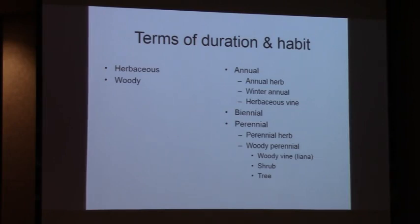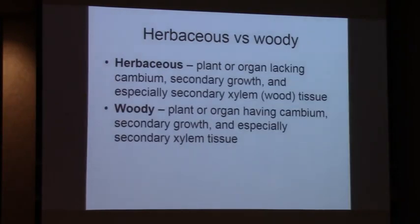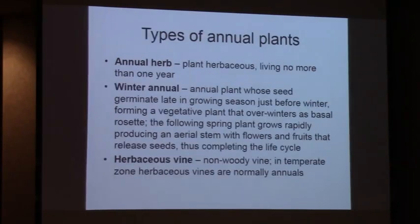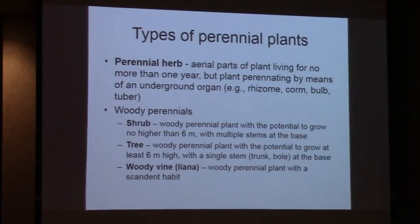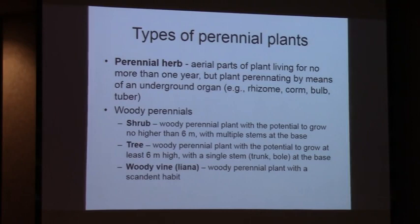Then we've got woody vines, lianas, shrubs, and trees. What's the distinction between a shrub and a tree? Six meters or 20 feet - that's the threshold. A tree is a woody perennial plant that has the potential to attain a height of at least six meters or 20 feet. Shrubs are woody perennial plants that don't normally grow any higher than that. Shrubs also typically have multiple woody stems at the base, while a tree typically has a single trunk at the base. Sometimes plants don't follow the books, so you have to use your judgment.